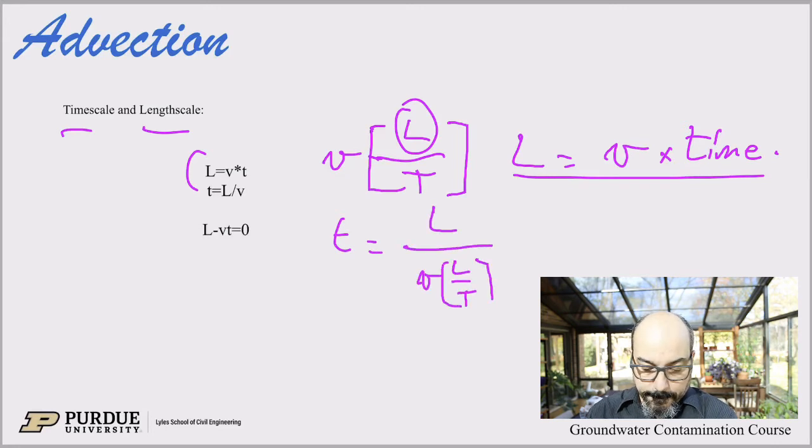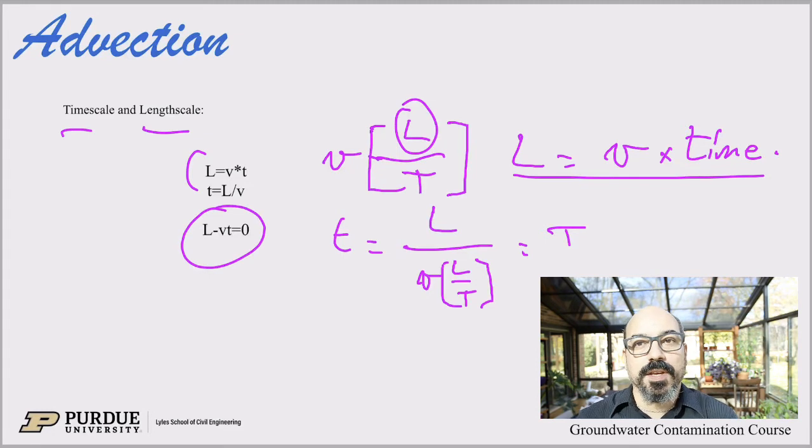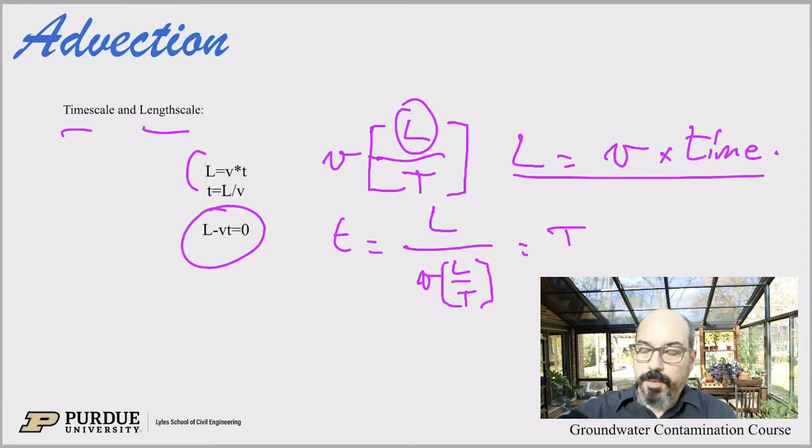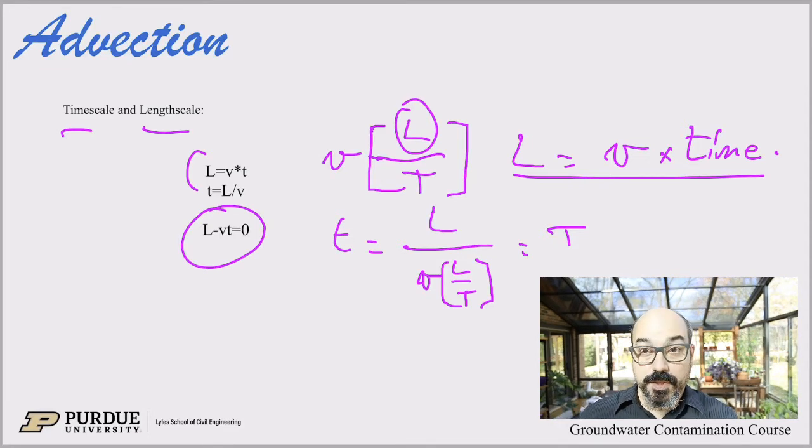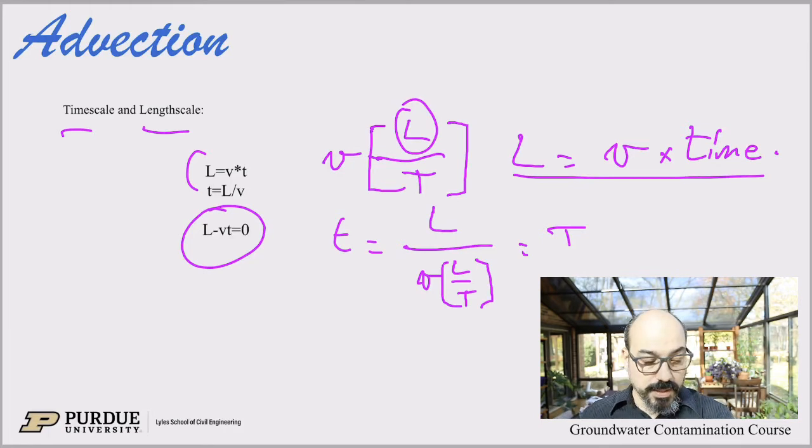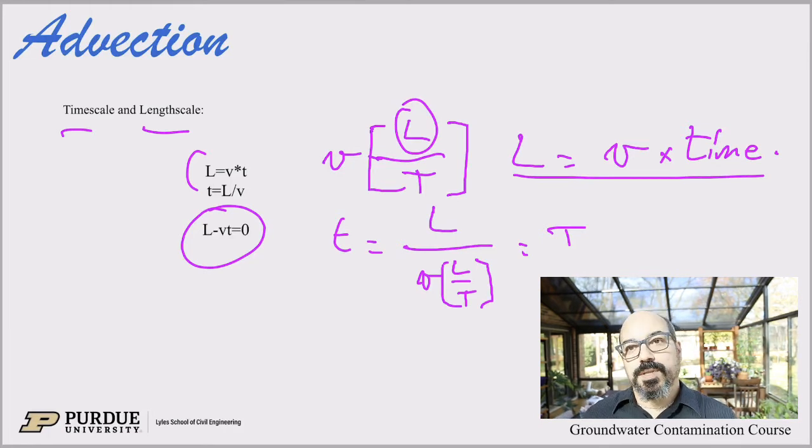One thing of note is that when you have something advecting - think of a river, for example, flowing downstream - if you take a length minus the velocity times the time it took to get there, we get zero. So L minus vt equals zero. This is an important length or an important scaling that we'll use when we solve this equation.